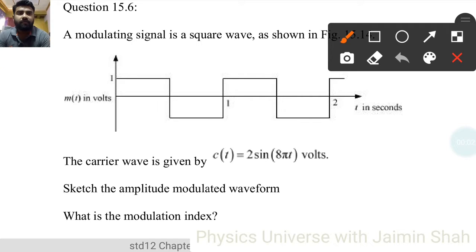The modulating signal is a square wave as shown in this figure. The carrier wave is given by c(t) = 2sin(8πt) volts. Sketch the amplitude modulated waveform.